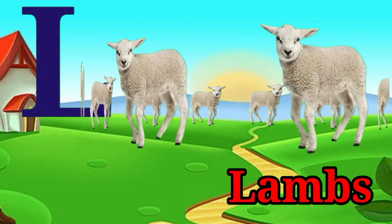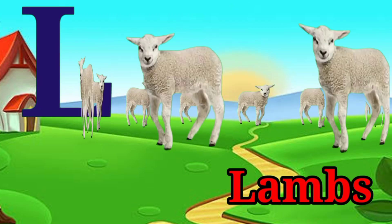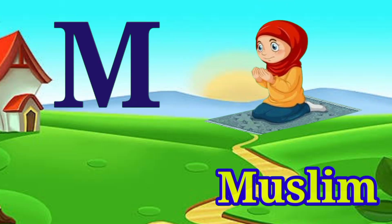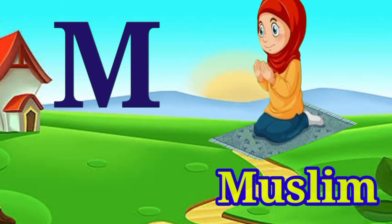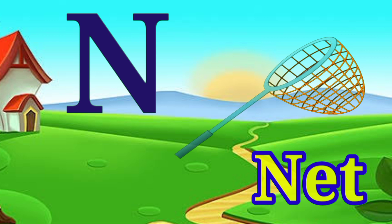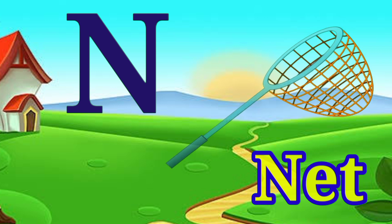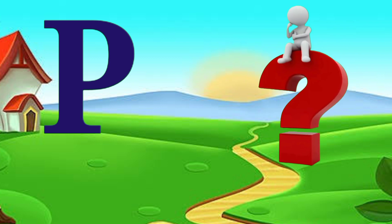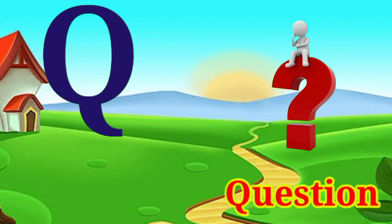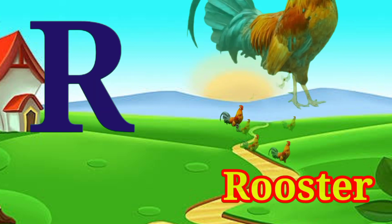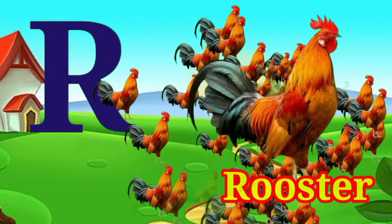L for Lambs, M for Muslim, N for Net, O for Oil, P for Puppet, Q for Coaster.